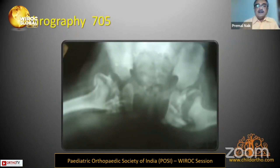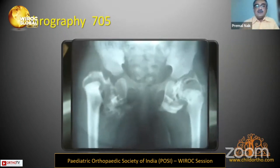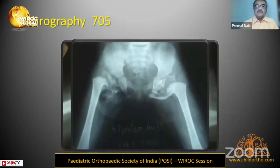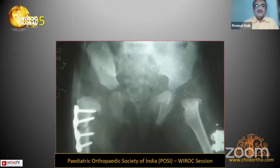You can see bilateral capital femoral epiphysis is present. With external rotation you can see there is dislocation on the right and left side; there is a coxa magna. In the internal rotation abduction view, the right hip is dislocated and the left hip has a coxa magna.